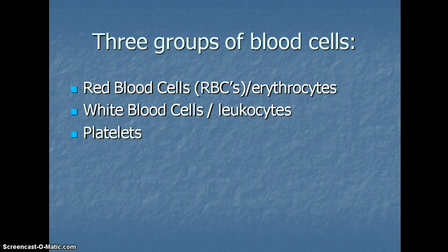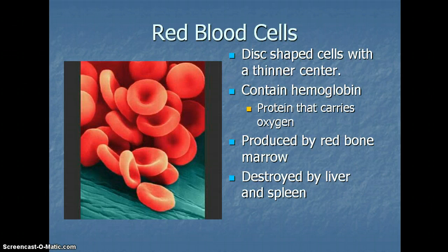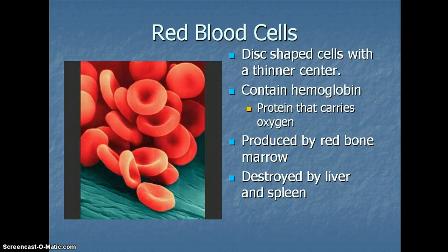There are three groups of blood cells: red blood cells, which are also known as erythrocytes; white blood cells, which are known as leukocytes; and platelets. Red blood cells are disc-shaped cells with a thinner center. They contain hemoglobin, a protein that carries oxygen. When hemoglobin has oxygen with it, it turns a bright red color, giving red blood cells their distinctive color. Red blood cells are produced by the red bone marrow, and after they live about 120 days, they're destroyed by your liver and by your spleen.